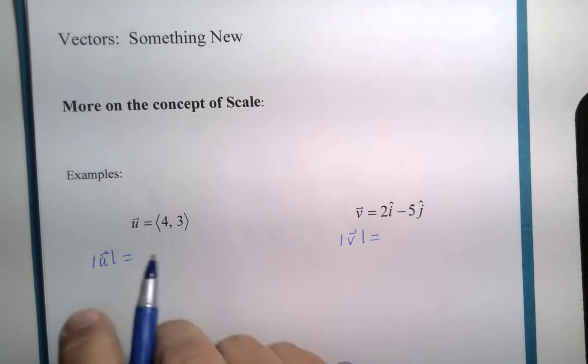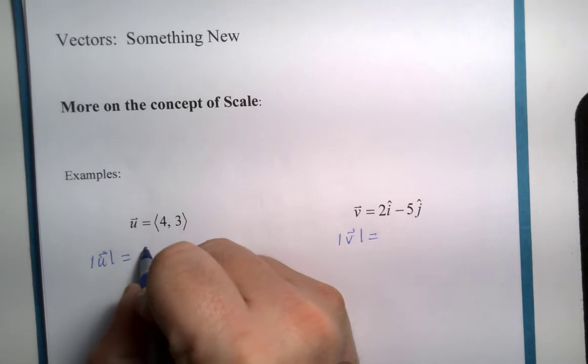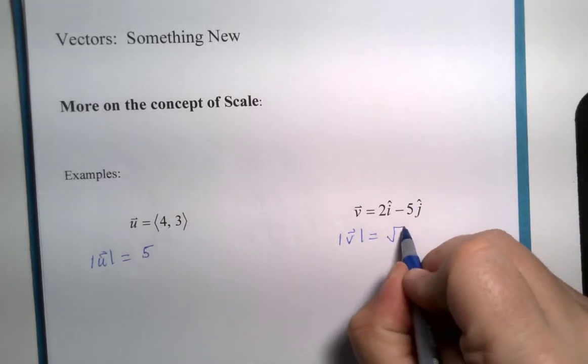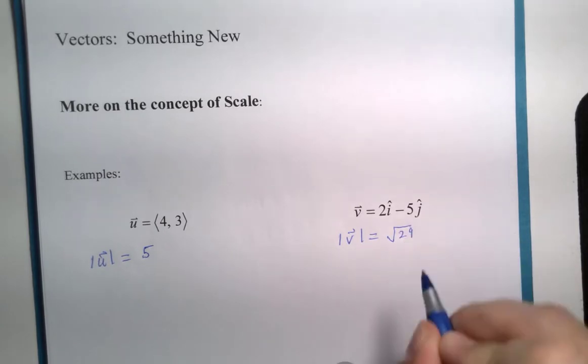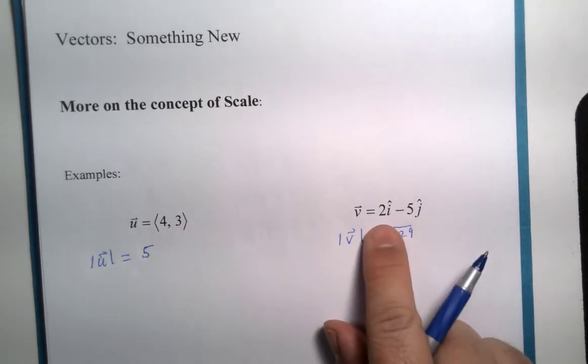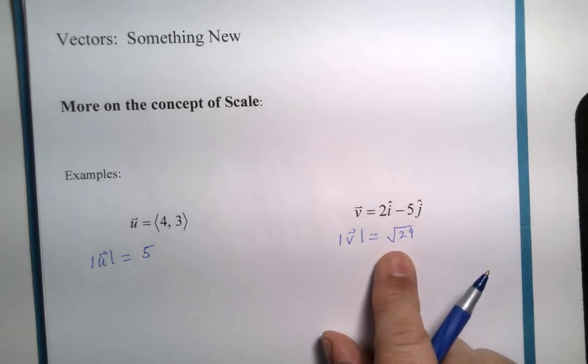Welcome back. The magnitude of this vector should be 5, and the magnitude of vector v should be the square root of 29. So, 4 comma 3, magnitude is 5, 2i minus 5j, otherwise known as 2 comma negative 5. Its magnitude is the square root of 29.